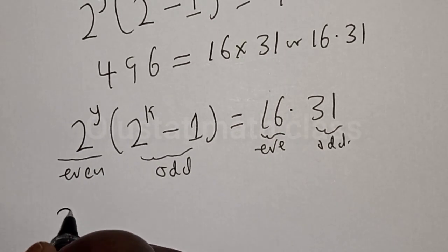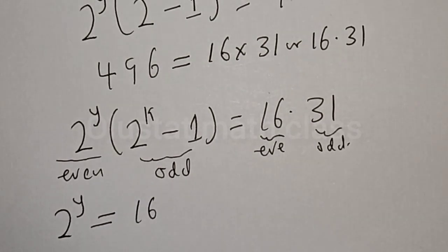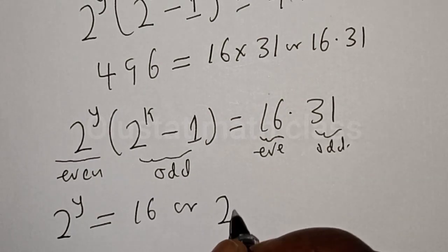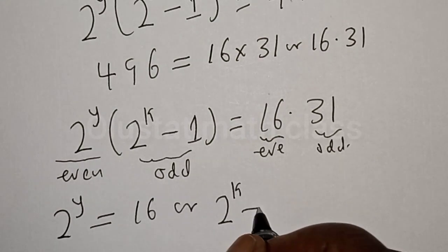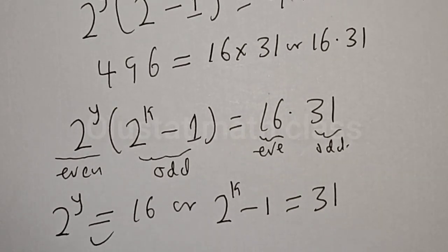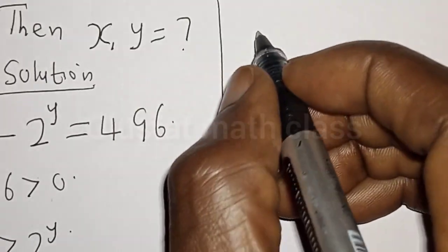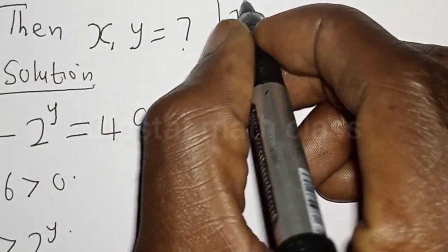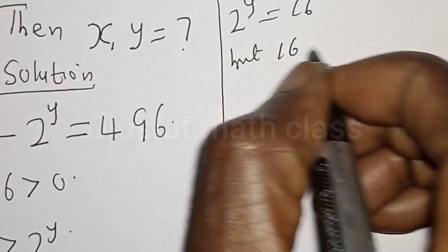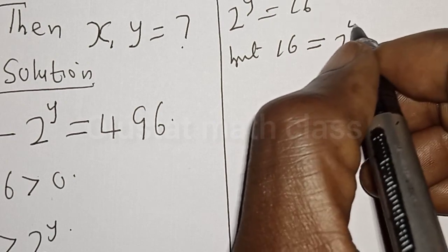We have 2 raised to power y is equal to 16, or 2 raised to power k minus 1 is equal to 31. Now let's work with the first equation. We have 2 raised to power y is equal to 16, and 16 can be expressed as 2 raised to power 4.